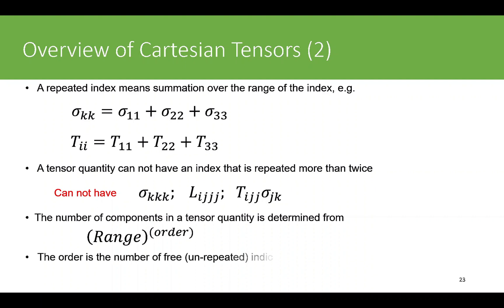The order is the number of free indices in a tensor quantity. When you say free indices, this means which are unrepeated or not repeated. A repeated index is not counted in determining the order of a tensor.